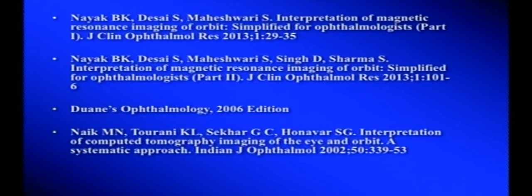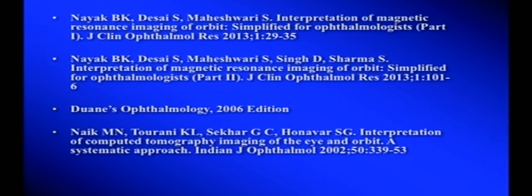Four references are provided: two JCOR articles on MRI basics and MRI pathological conditions (very simple to read), one freely downloadable book from the internet, and one Indian Journal of Ophthalmology article on CT scan. All the material covered in this talk is in those references. To get these things fixed in your brain, please go through these articles in the next month — otherwise this lecture will be absolutely useless. Now I hand over to Dr. Deepak Bhat who will talk about ultrasonography of the eye and orbit.